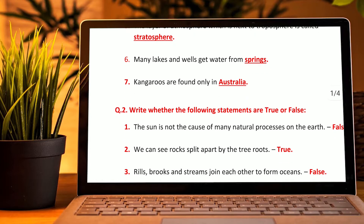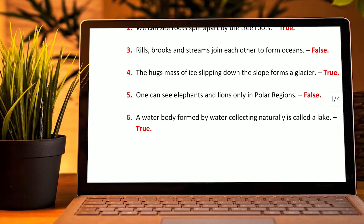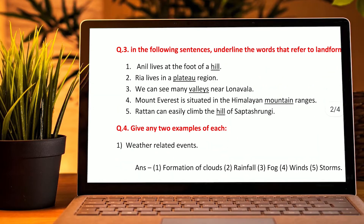Kangaroos are only found in Australia. Second: write whether the following statements are true or false. The sun is not the cause of many natural processes on earth — False. We can see rocks split apart by tree roots — True. Rills, brooks, and streams join each other to form oceans — False. The huge masses of ice slip down the slope from a glacier — True. One can see elephants and lions only in the polar region — False. Water collected naturally is called a lake — True.